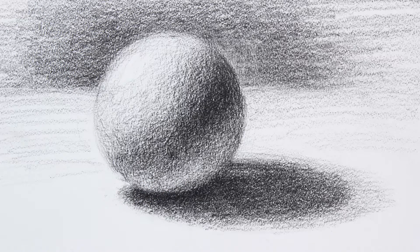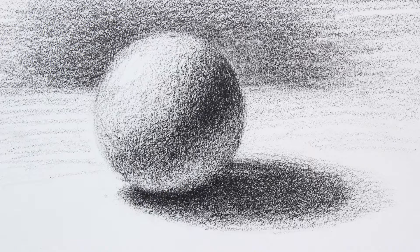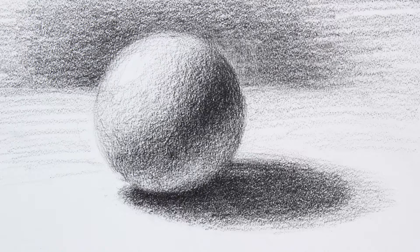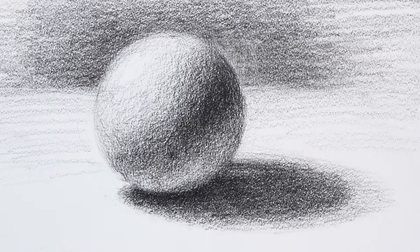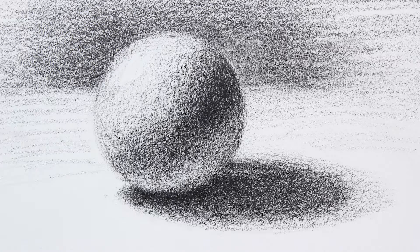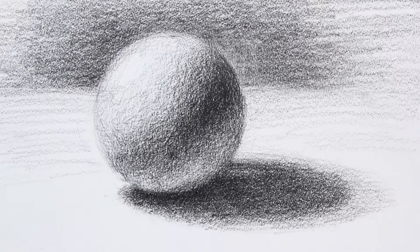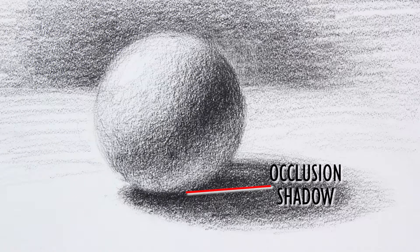Notice how the cast shadow is darker than the sphere near the point where they meet. And now if we look very closely at that point, you may notice that both surfaces get so dark and out of focus, it's hard to distinguish between the sphere and the table. This area is called the occlusion shadow.